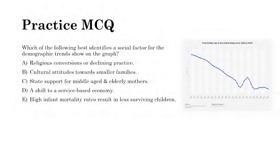A practice MCQ asks which social factor explains the demographic trend shown on a graph of TFR in the United States over 220 years. Overall, the TFR has decreased, with some fluctuations — like the post-WWII baby boom — but continuing to decline overall.